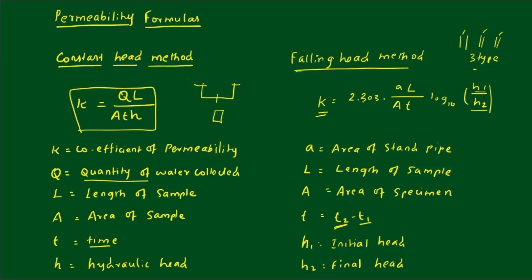In the falling head method, the quantity of water collected is not needed. But in the constant head method, the quantity of water collected is required to calculate the coefficient of permeability. In the formula, lowercase a is the area of the stand pipe, capital A is the area of the specimen, and T is equal to T2 minus T1.